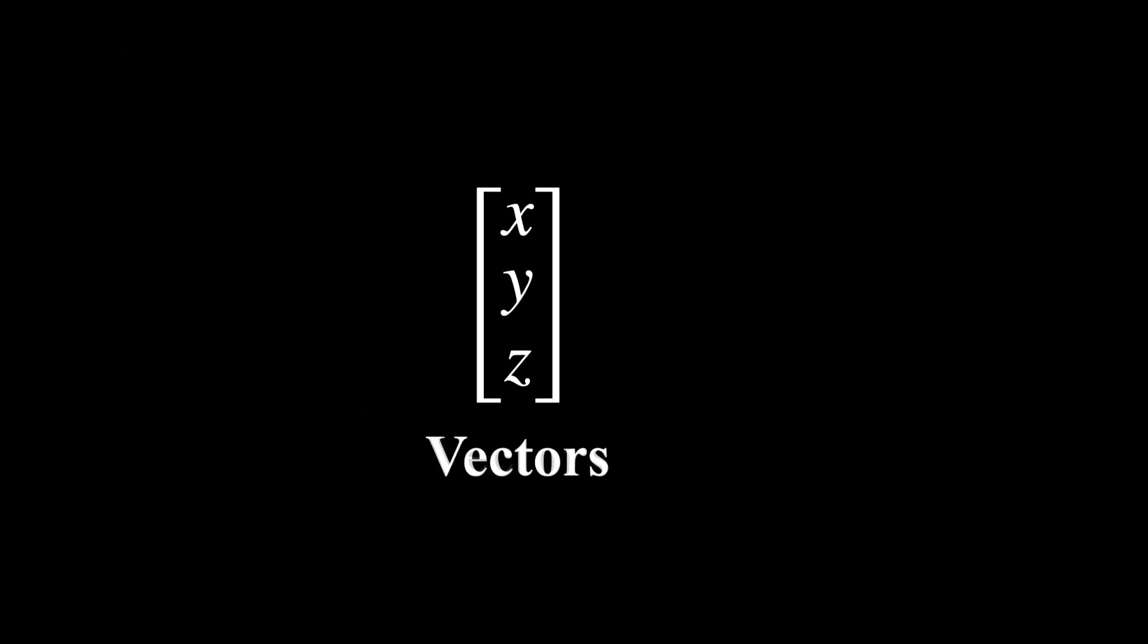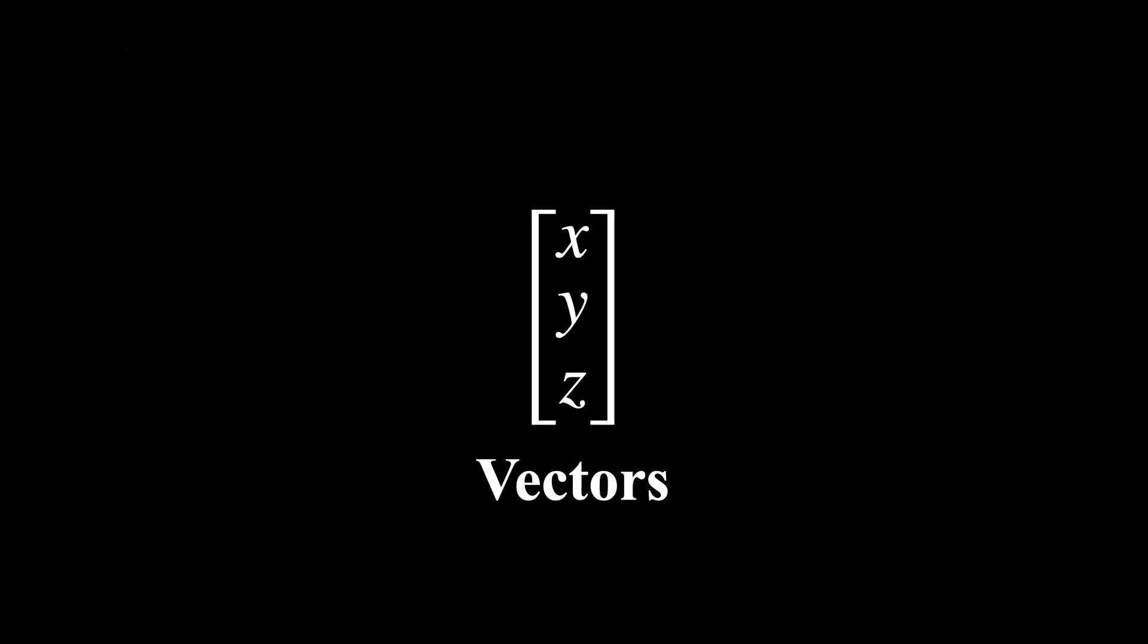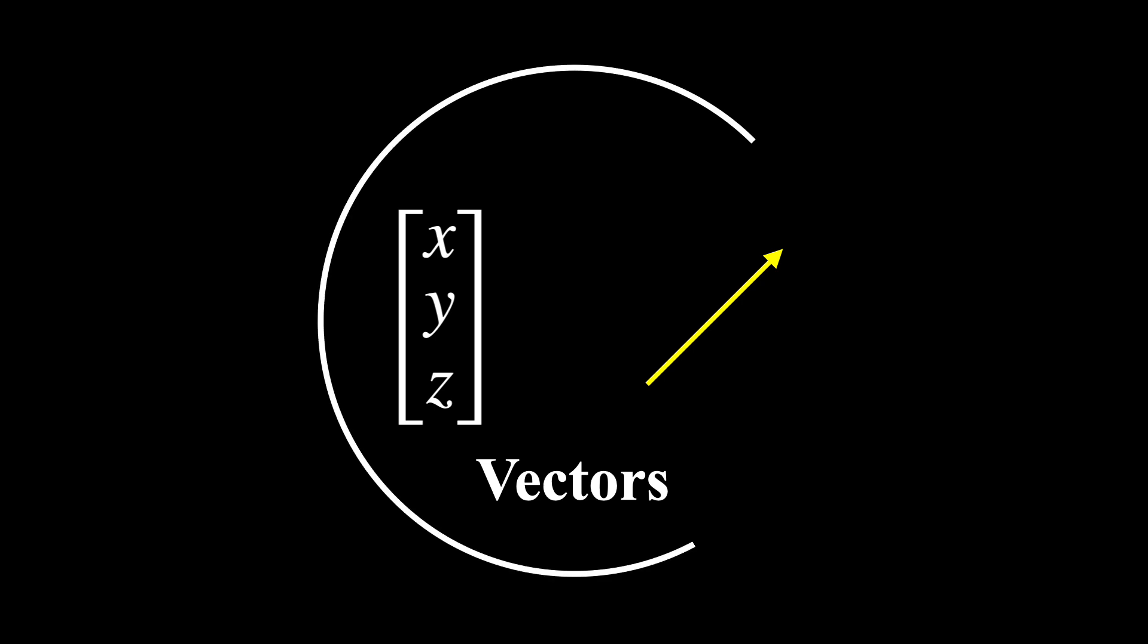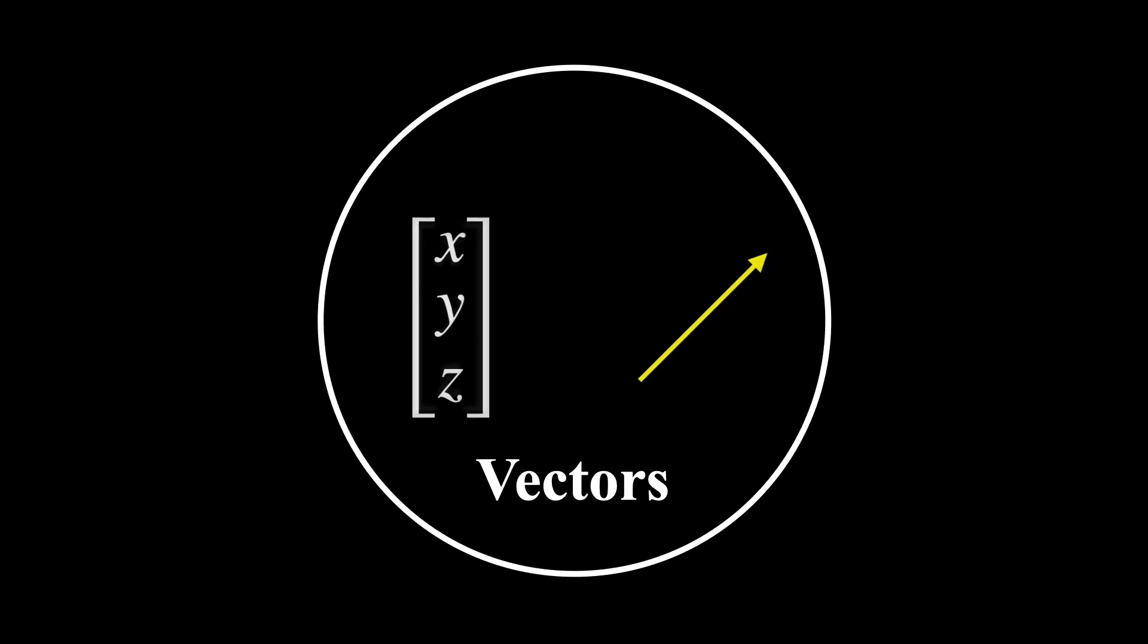Okay, so first let's discuss vectors. What really is a vector? The common notions of a vector as an ordered list of numbers or as an arrow in space are just two specific instances of the much broader and abstract mathematical concept of a vector.